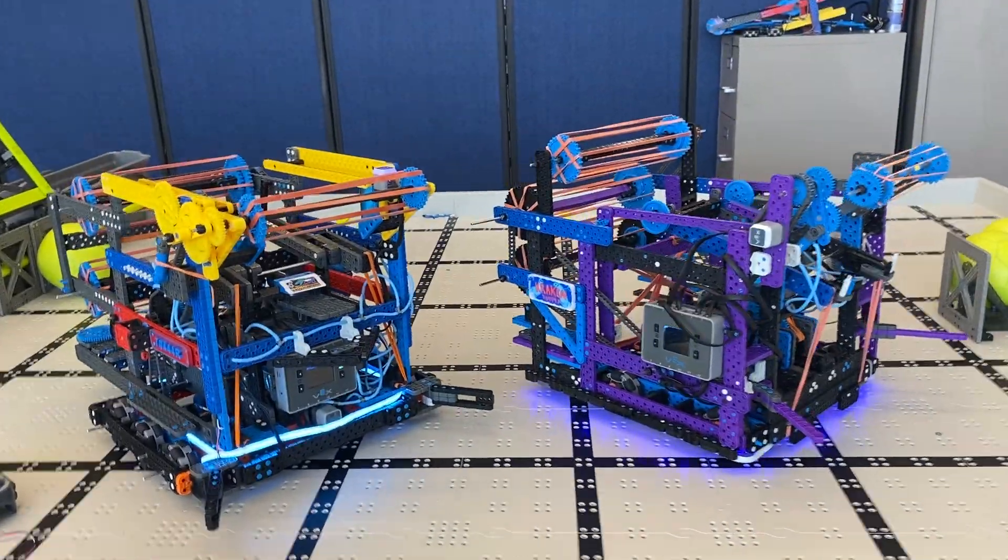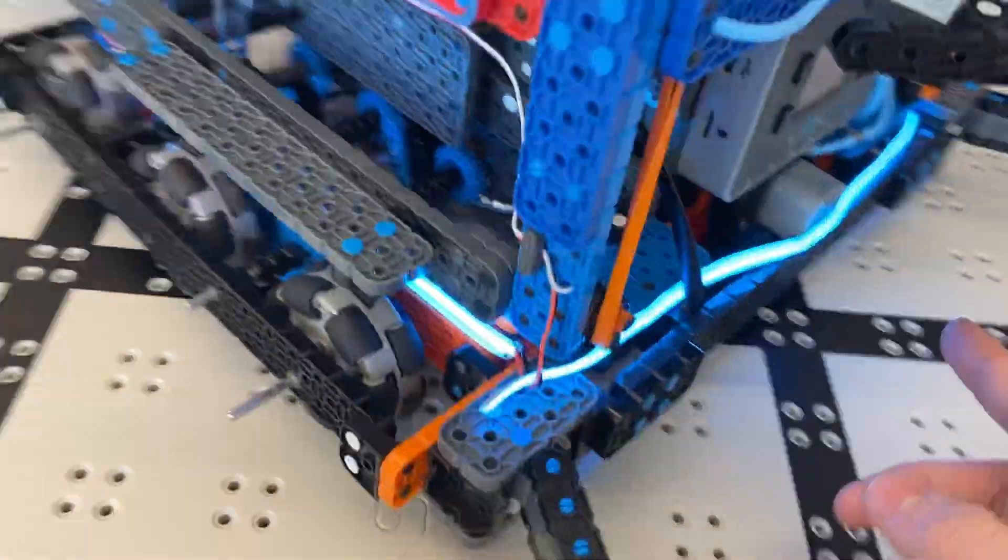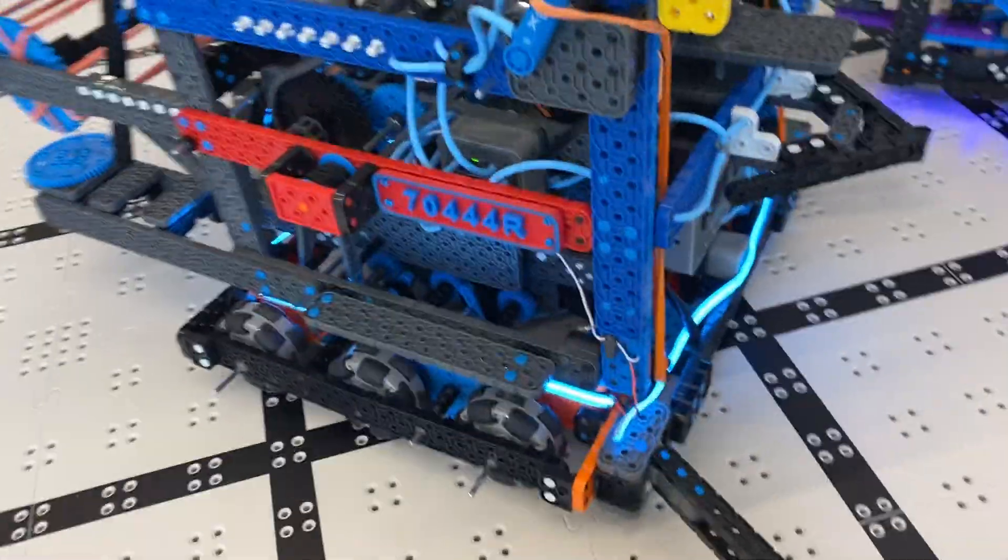This is how you put LEDs on your robot. A lot of people at regionals and online have asked me how I have these LEDs on my robot. As you can see, they wrap around all the way.